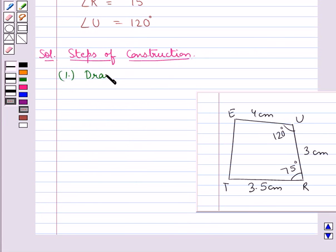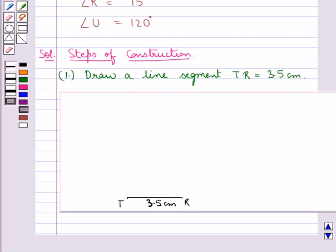draw a line segment TR equal to 3.5 cm. So as you can see, we have taken a line segment of 3.5 cm in length.